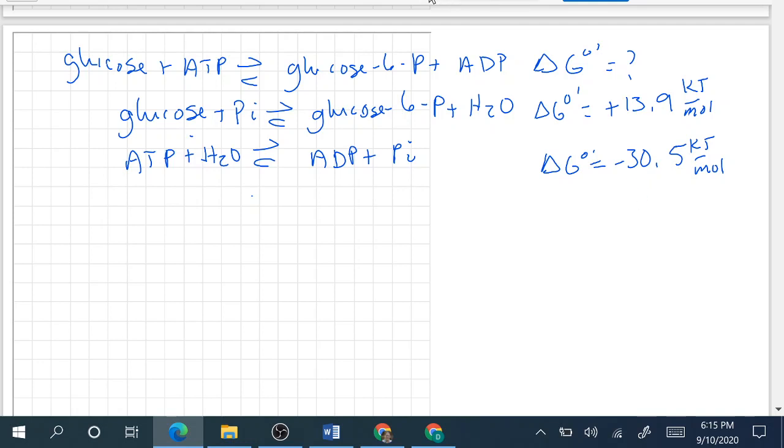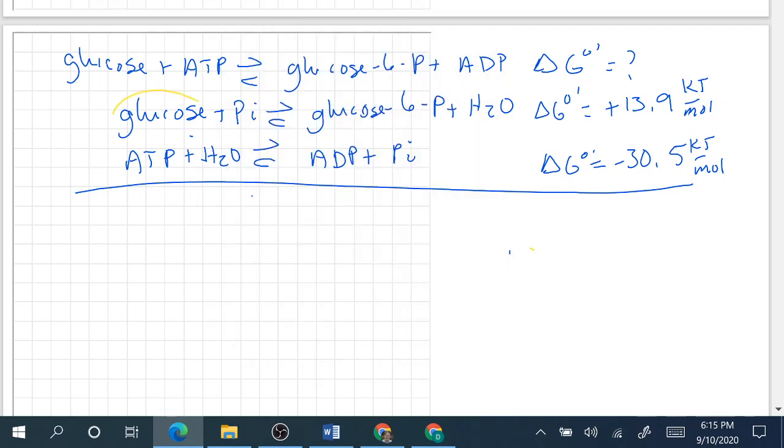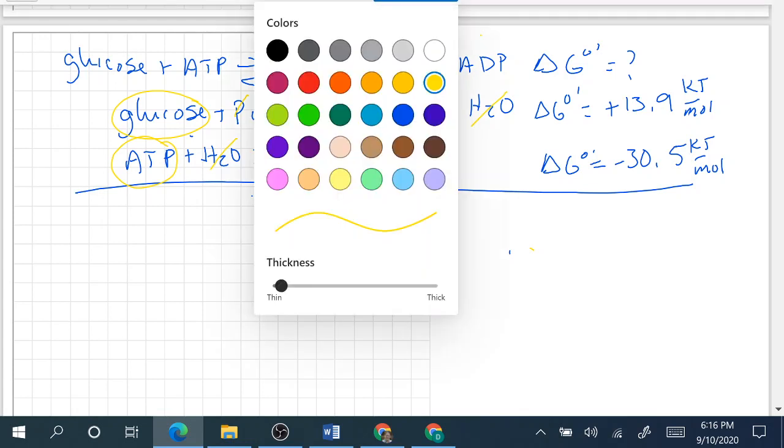If we add these reactions up, glucose plus ATP yields glucose 6-phosphate plus ADP. The Pi's cancel because they're going to be on opposite sides of the equation, and H2O water cancels.